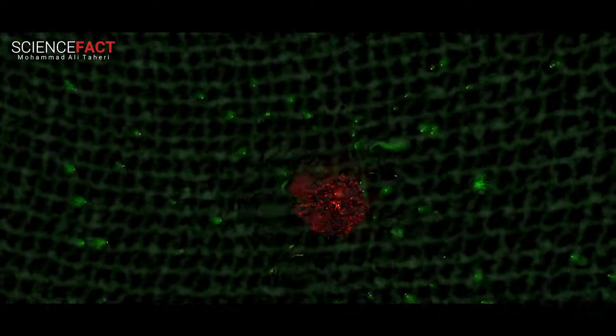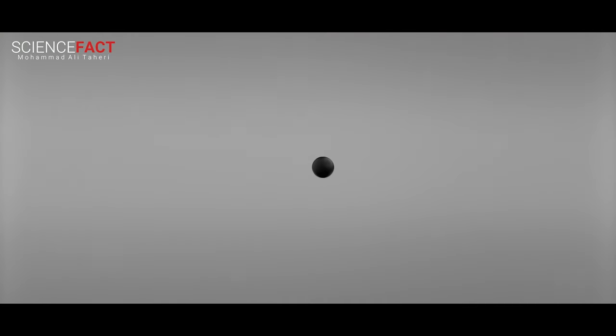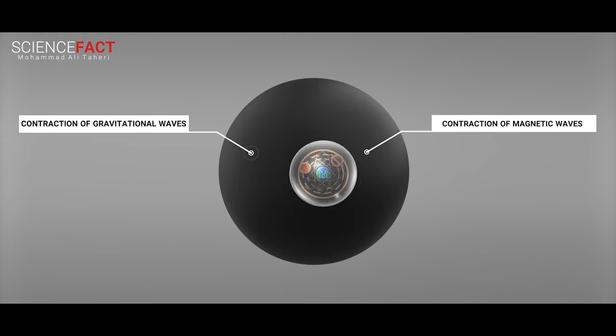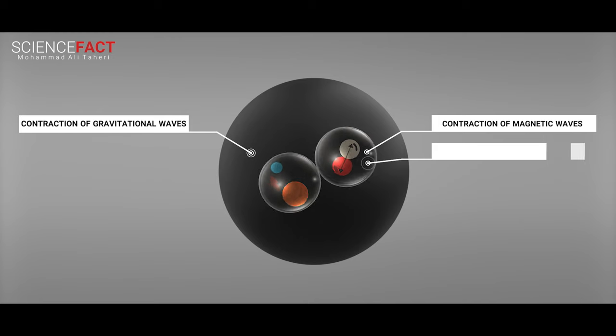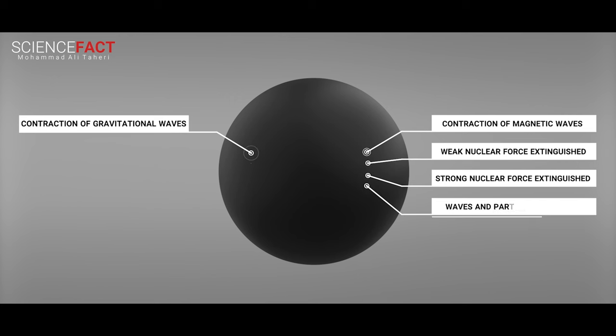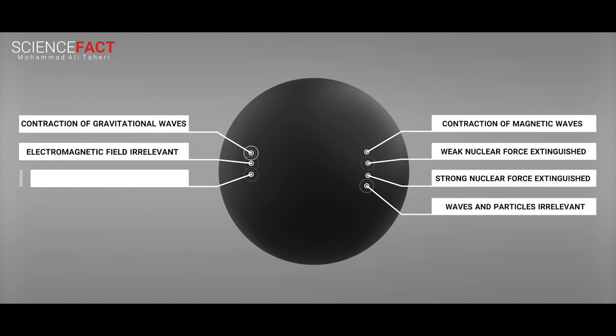Amid the turmoil, depressing of space is also occurring. Everything is crushed into itself and compressed into the center of the future cosmos. Gravitational waves and magnetic waves are all contracted. The weak nuclear force and the strong nuclear force cease to exist as the fields are wiped out. Waves, particles, and electromagnetic fields are all no longer relevant. Under these conditions, length and distance are meaningless, which means the Planck length is no longer applicable.